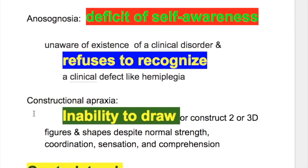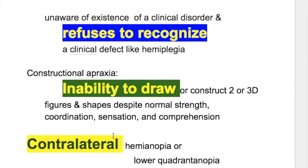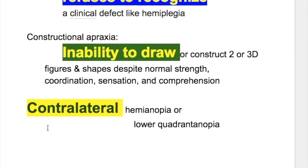There is also constructional apraxia, which is the inability to draw or construct two or three-dimensional figures and shapes despite normal strength and comprehension. The last feature is contralateral hemianopia or lower quadrant anopia due to involvement of the optic radiation fibers.